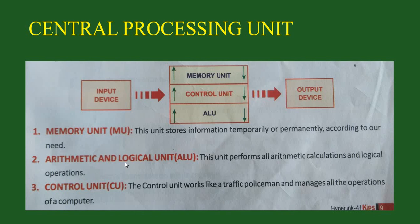ALU stands for Arithmetic and Logical Unit. First is the memory unit — this unit stores information temporarily or permanently according to our need. Next is the Arithmetic and Logical Unit — this unit performs all the arithmetic calculations and logical operations. When you do calculations, they are performed by the ALU. Third is the control unit — the control unit works like a traffic policeman and manages all the operations of a computer.